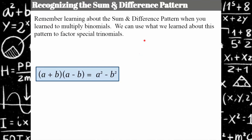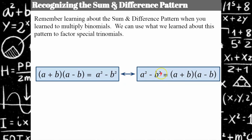Now let's look at how to recognize the sum and difference pattern. When you learned to multiply binomials, you learned that (a + b)(a − b) = a² − b². We're going to use this to identify that if we have a polynomial in the form a² − b², we know that factored it's going to be (a + b)(a − b). The inner product and outer product form a zero pair — that's why we only have two terms, with the center term canceling out.